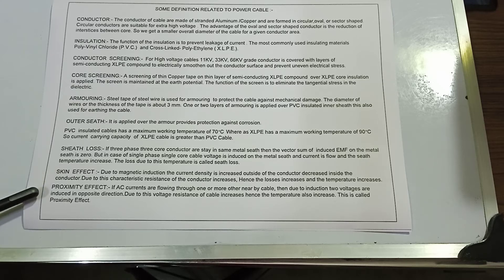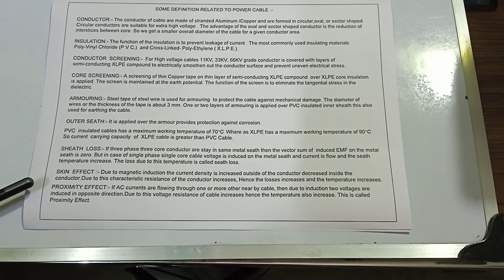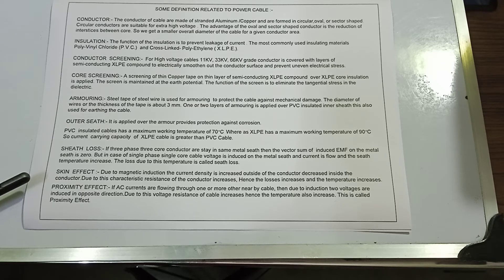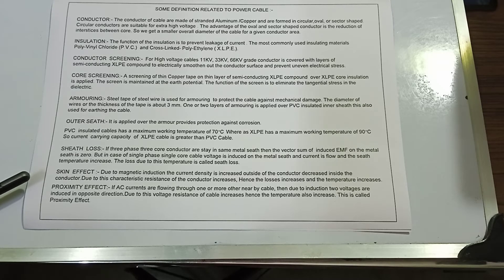Proximity effect: if AC currents are flowing through one or more other nearby cables, then due to induction, two voltages are induced in opposite directions. Due to this, the resistance of the cable increases and the temperature also increases. This is called the proximity effect.